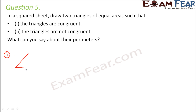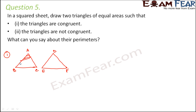So let us first consider the first scenario. Let us say this is one triangle and we draw another triangle which is exactly identical to the first triangle. So in this case, if this is triangle ABC and this is triangle DEF, the area enclosed by triangle ABC is equal to the area enclosed by triangle DEF. Since these two triangles are exactly identical, AB is equal to DE, BC is equal to EF, and AC is equal to DF.